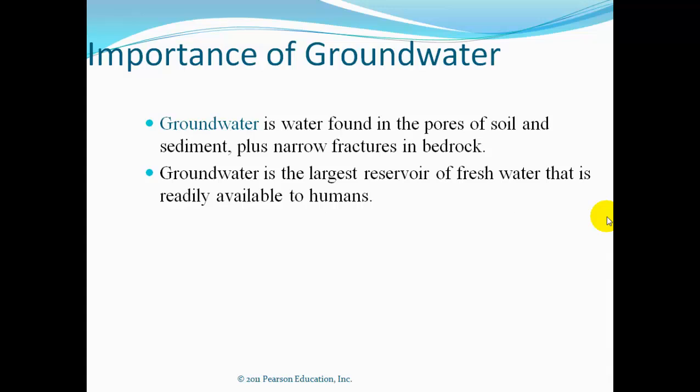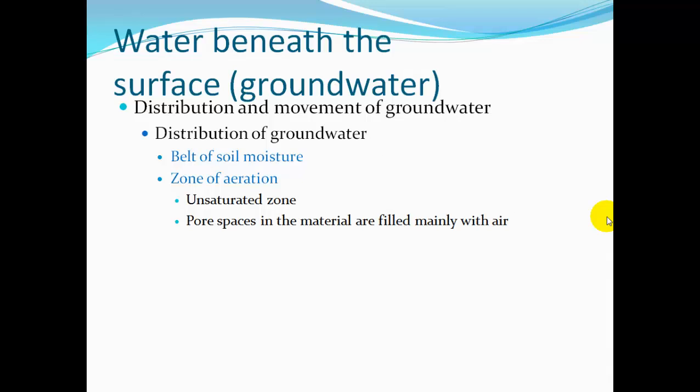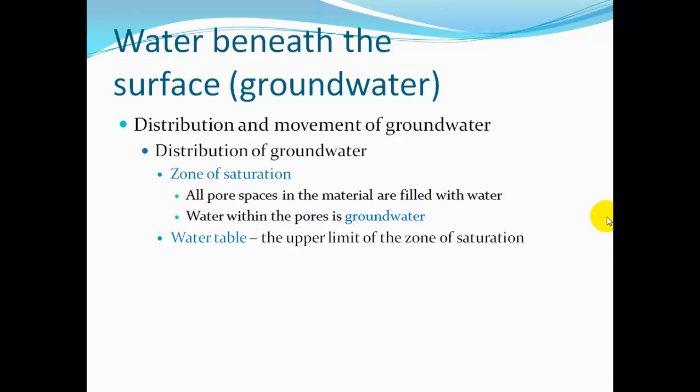Groundwater is found in the pores of soil and sediment plus narrow fractures in bedrock, and it's our largest reservoir of freshwater readily available to humans, usually through drilling wells. Groundwater is found in the belt of soil moisture in the soil, and above the main groundwater is usually a zone of aeration — an unsaturated zone — where the pore spaces in the soil and rock are filled mostly with air instead of groundwater.